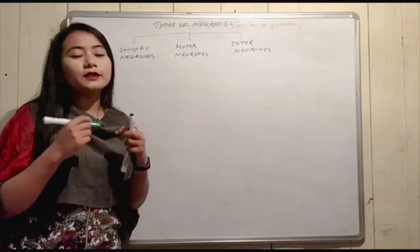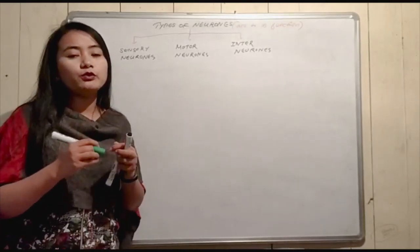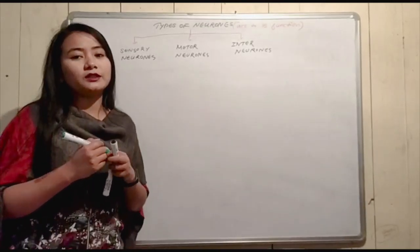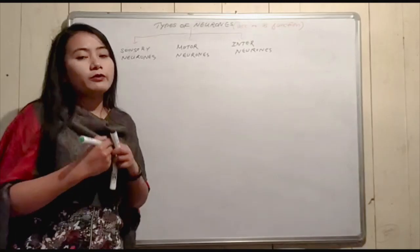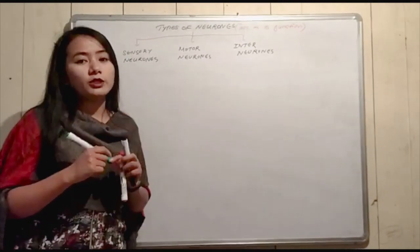A neuron is the basic structural and functional unit of the nervous system.